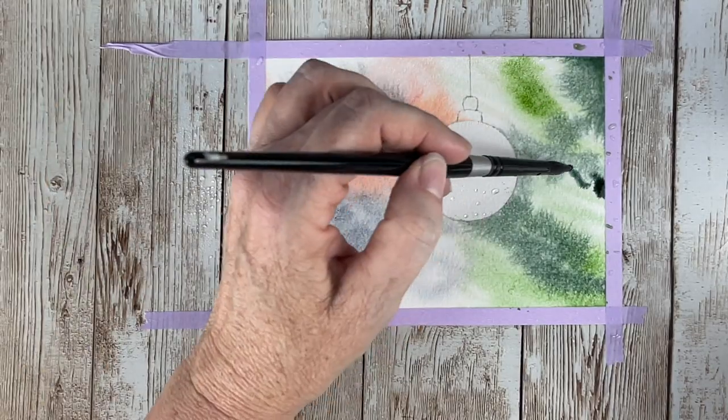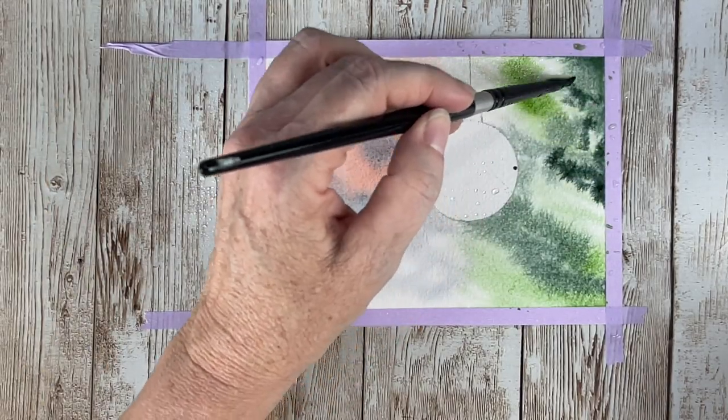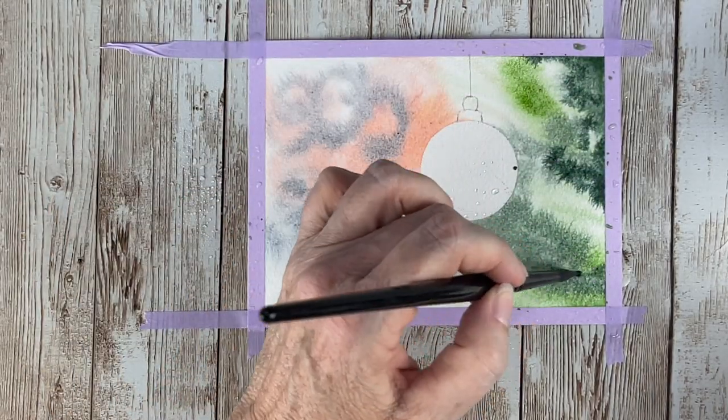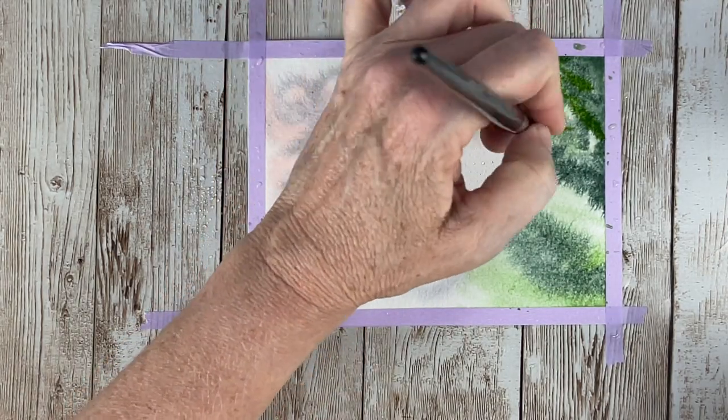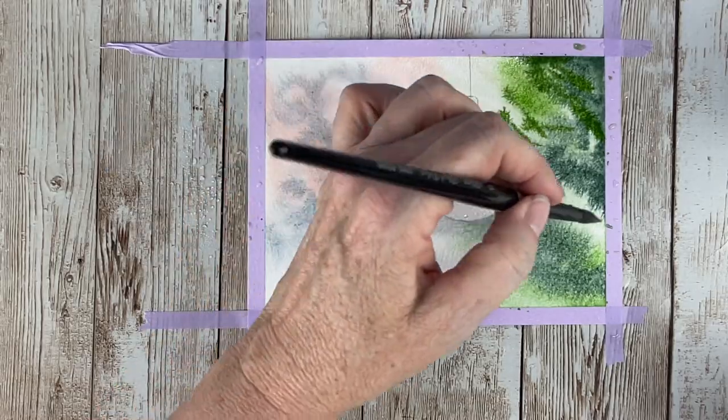I'm not looking for detail at all, just very soft because we want the Christmas ornament to be the center of attention. Putting in a little more sap green for it to be darker.